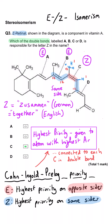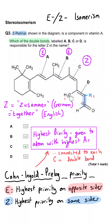Just double-checking D: the bond pointing down has only a hydrogen, and comparing the two branches we get carbon then hydrogen versus carbon then carbon, making the carbon-carbon branch higher priority. The highest priority groups on each side are on opposite sides, so D is also E. Therefore C is the correct answer.